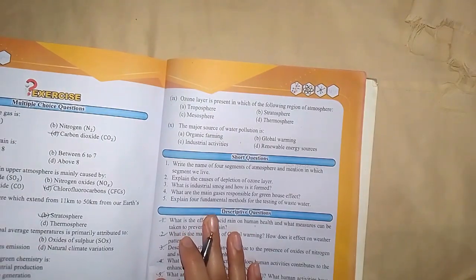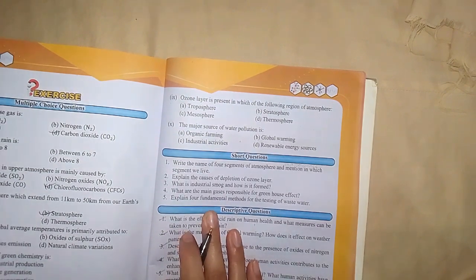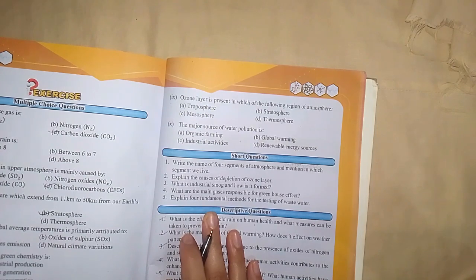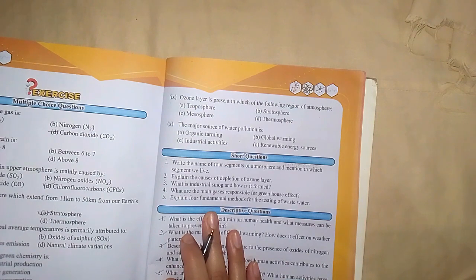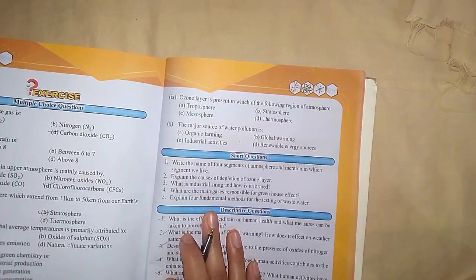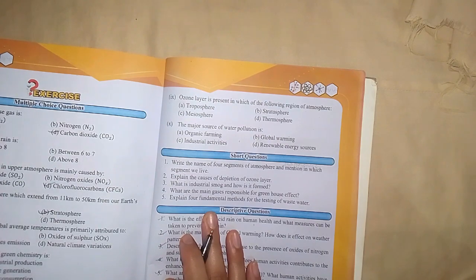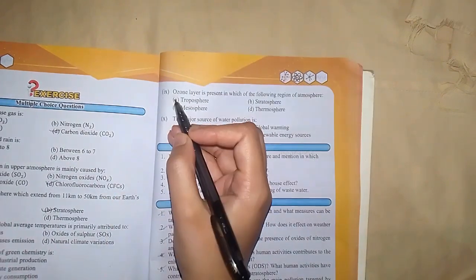MCQ number 9: Ozone layer is present in which region of atmosphere? There are regions like mesosphere, troposphere, stratosphere, and thermosphere. The region where humans live is troposphere, but the ozone layer is present in stratosphere. The correct option is A, stratosphere.